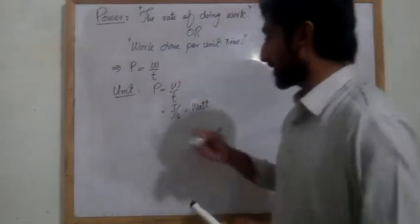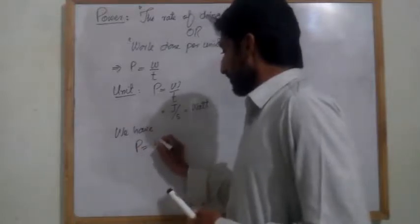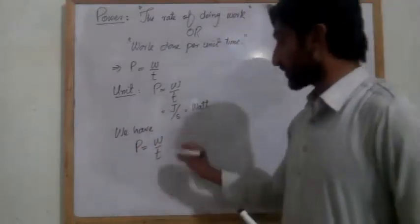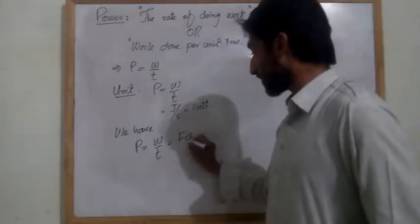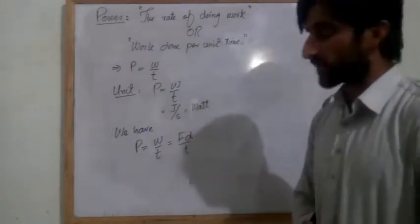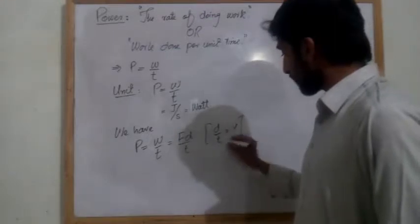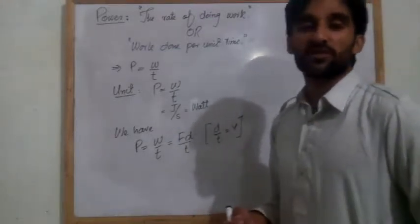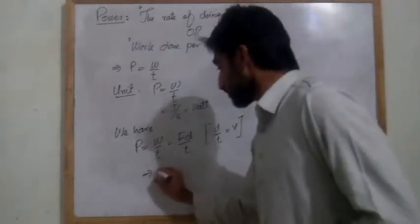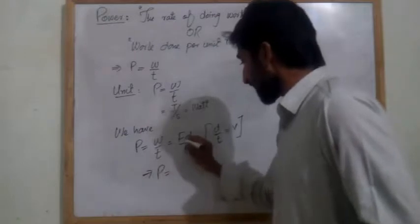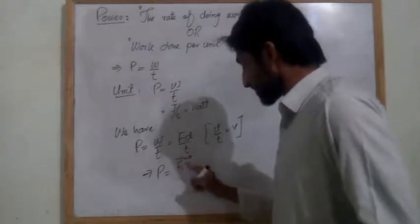If we look at this formula as a derivative function, we have displacement over time, which gives us velocity. So P is equal to F dot d, which will be equal to F dot v.